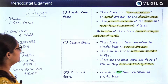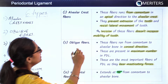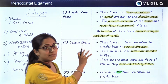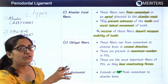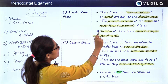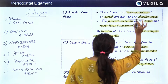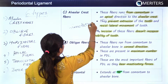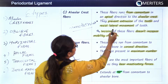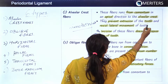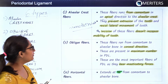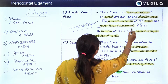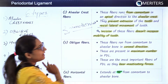The first is the alveolar crest fibers. As the name suggests, these fibers run from cementum in an apical direction to the alveolar crest. The direction of the fibers plays a very important role in their mechanism. Their main functions are to prevent the extrusion of the tooth and to resist lateral movement.